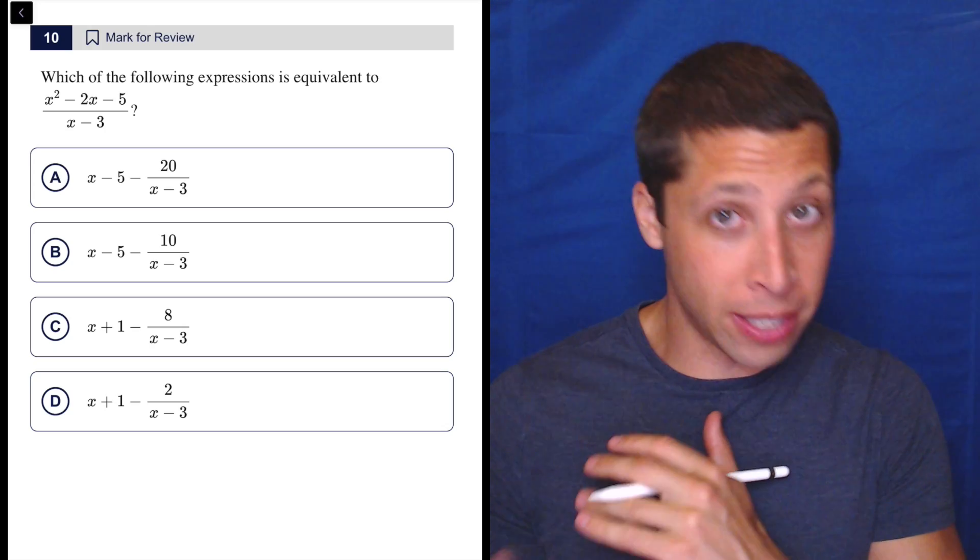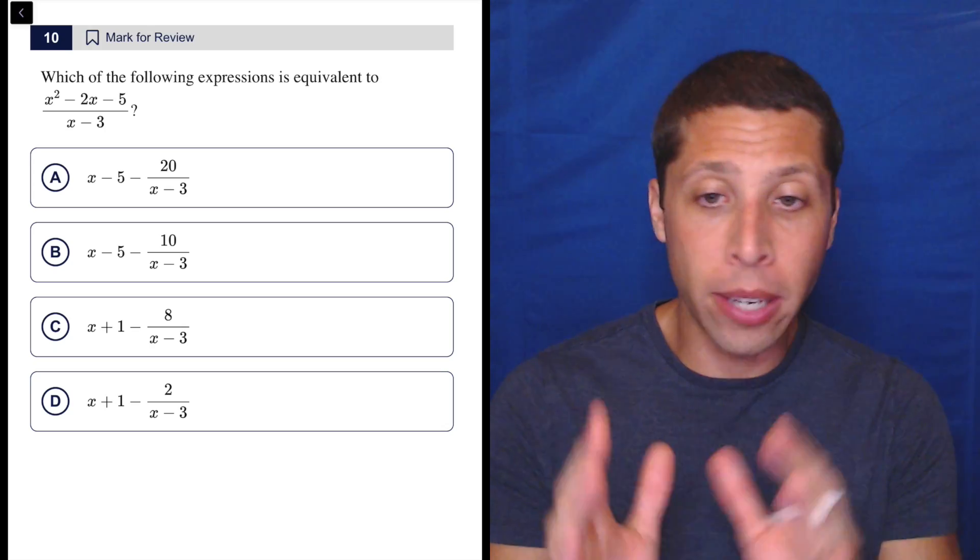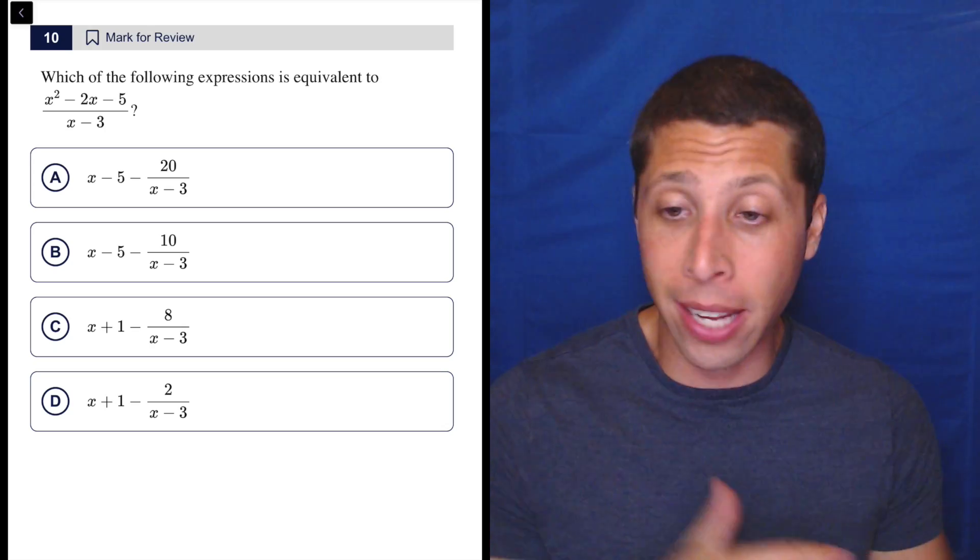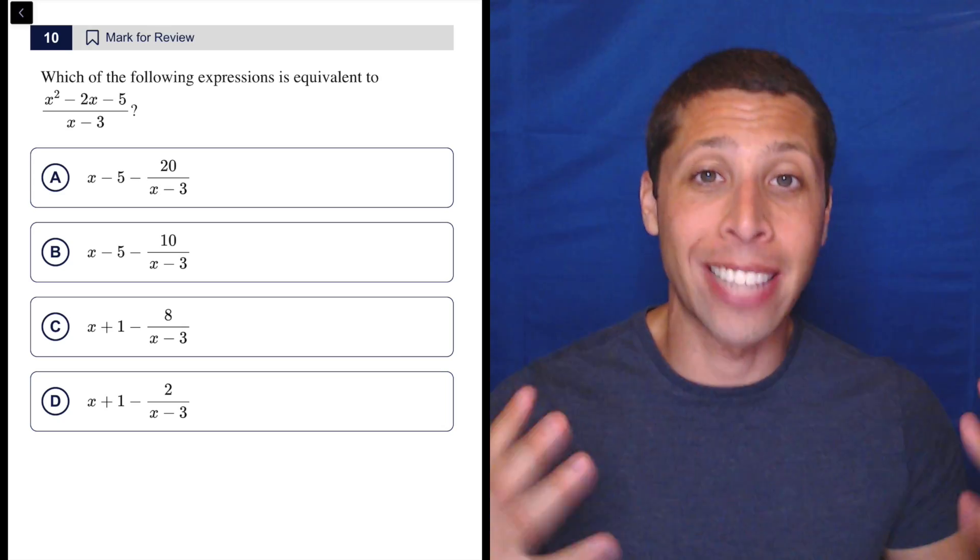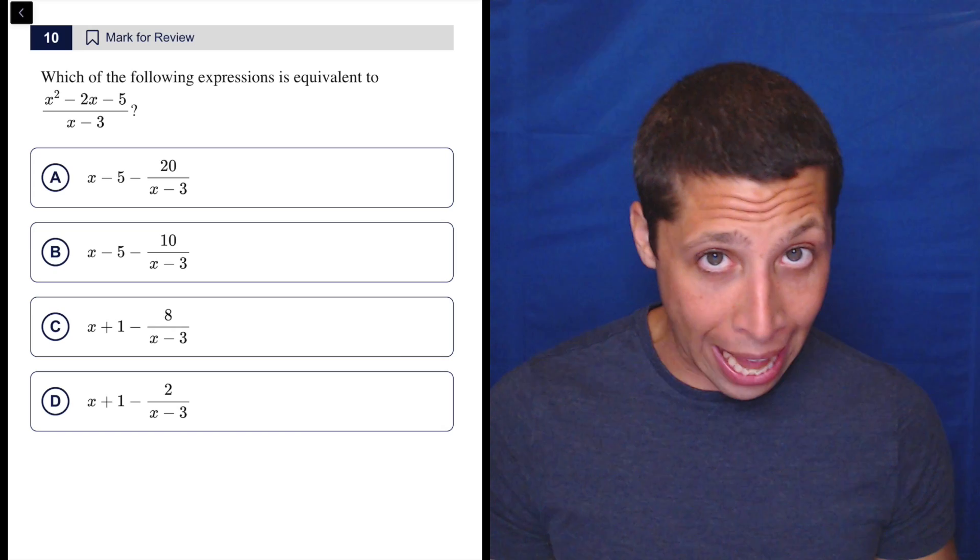So one way is definitely Desmos. We could go put x squared minus 2x minus 5 over x minus 3 into one of the lines, then go through the answer choices, do the same thing. If they're equivalent, they should make the same exact line or curve.